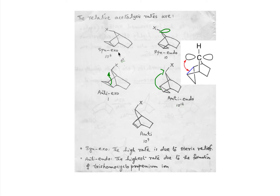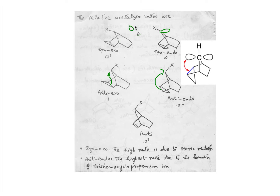Similarly, for the syn-exo case, the rate of reaction is better than anti-exo. In the anti-exo case, although there is no sigma participation, the incoming acetate or nucleophile faces hindrance due to the cyclopropyl ring. But in the syn-exo case, an SN2 reaction is possible between the acetate and the leaving group without any steric hindrance, so the product is produced more easily.